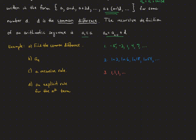Let's look at some examples. For each of three sequences — green, blue, and red — we want to find the common difference, the ninth term, a recursive rule, and an explicit rule. For the green sequence, the common difference is negative 2 minus negative 5, which is positive 3. That's the same as 1 minus negative 2. Starting from negative 5, we add 3 each time. So the common difference is positive 3.